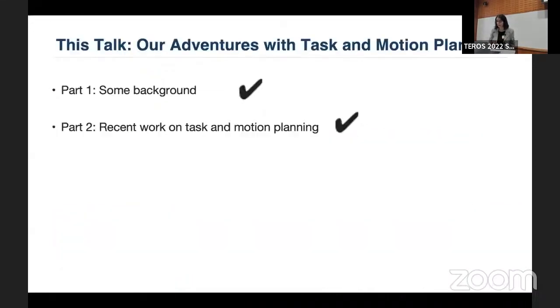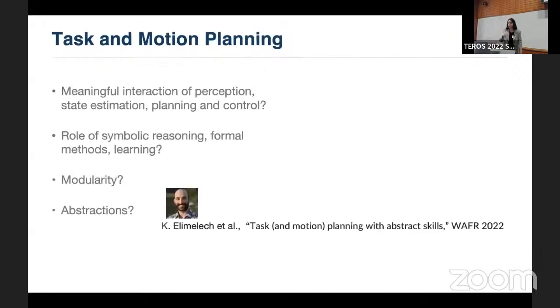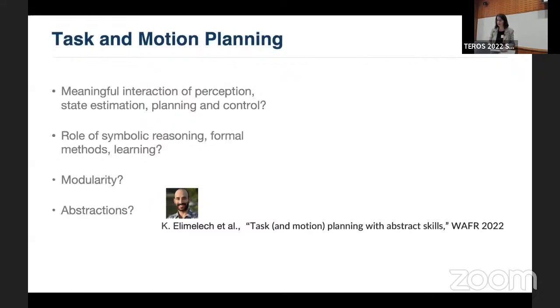I'm done. Part two is completed. What I wanted to say, I'm going to go back now to my slide saying that we use the task motion planning problem to talk about meaningful interaction of perception, state estimation, planning and control. We use this domain to understand the role of symbolic, formal methods and learning. We try to understand modularity. We try to understand abstractions. And Ken Elimelech, who is a postdoc in our group and who is somewhere here, will be giving a talk about our initial effort to understand the task motion planning skills. And I think this can help us go to long horizon tasks and move towards it.